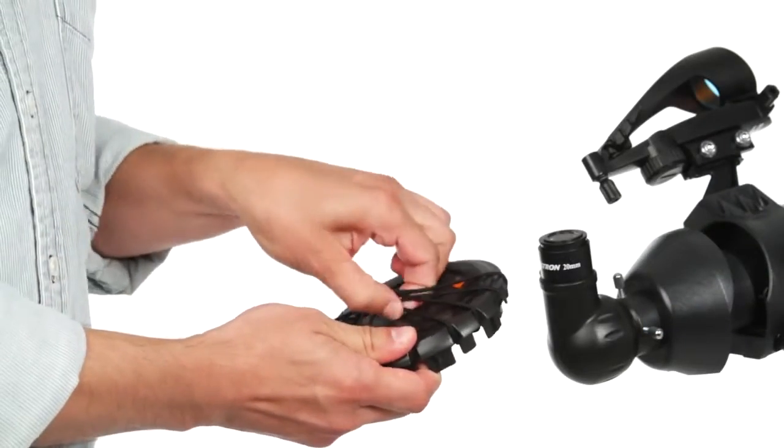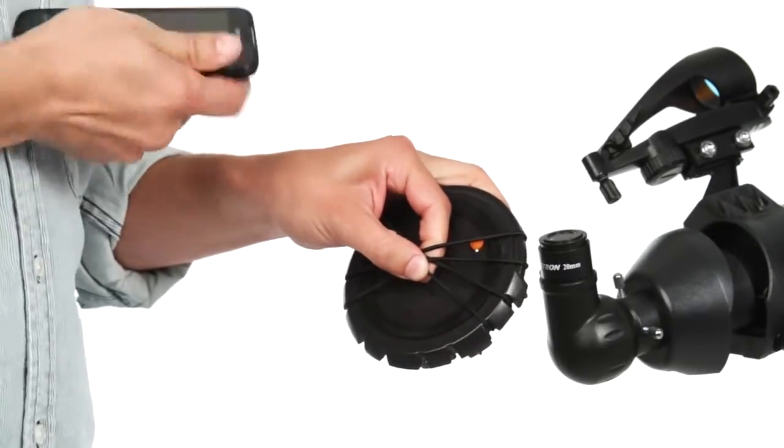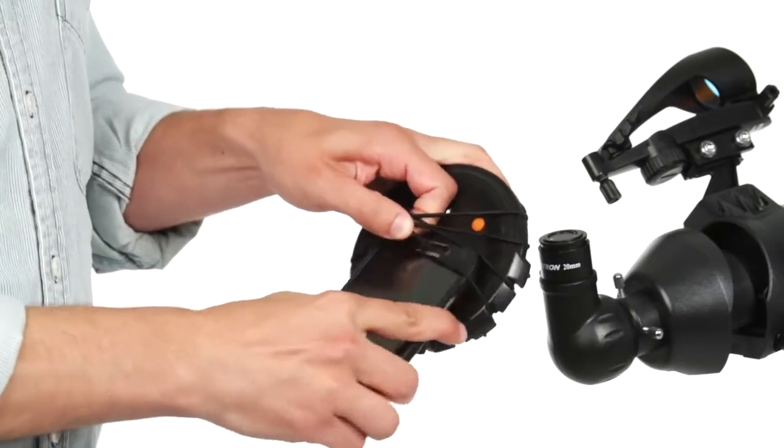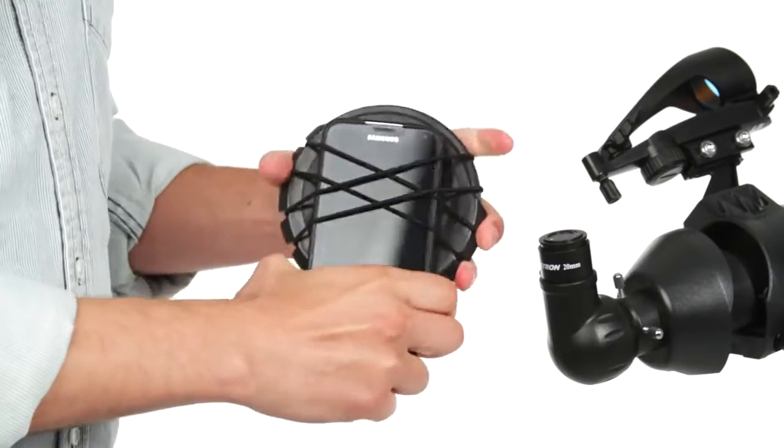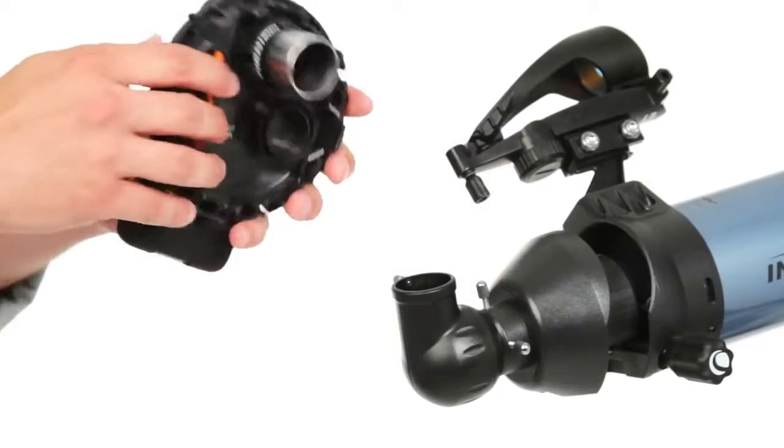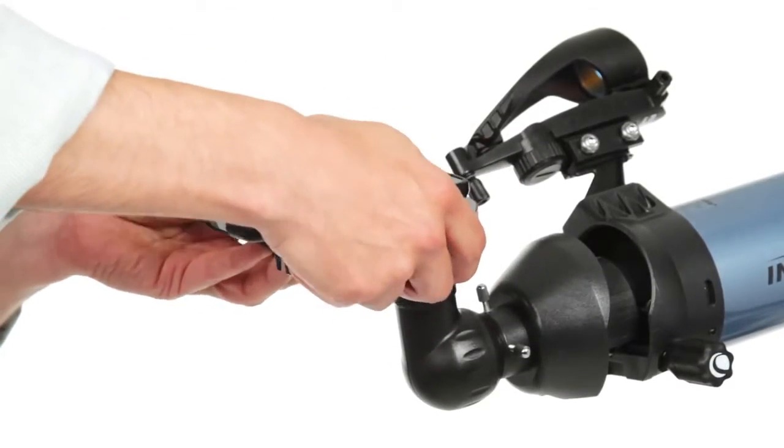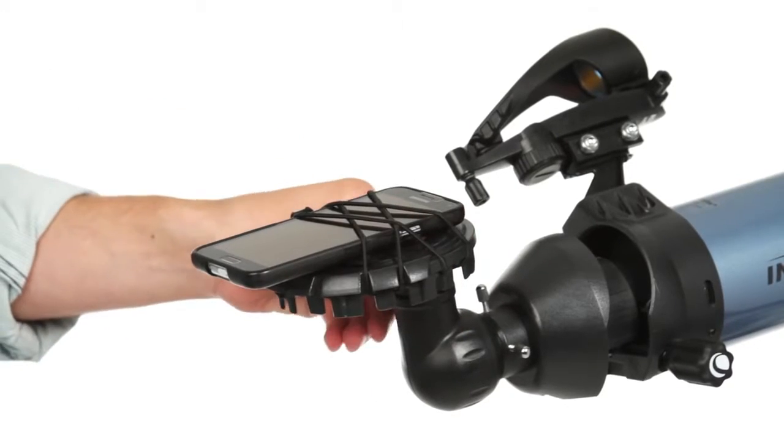Secure your smartphone between the adjustable bungee cords and the rubberized surface on the outside of the cap so your camera is viewing through the imaging port. The inside of the lens cap has a fitting that secures to your eyepiece using two set screws, and voila, you are now ready to take high-power images through the telescope.